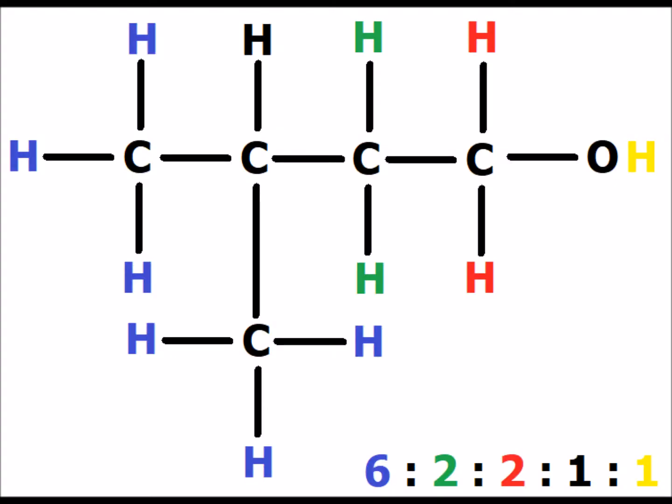In 3-methyl-1-butanol, we have five different types of hydrogen. We have the alcohol hydrogen shown in yellow, and two red hydrogens shifted downfield because of oxygen — confirming this is a primary alcohol. The two methyl group hydrogens, all shown in blue, are symmetry equivalent because of a mirror plane running through the second carbon (the branching carbon, also carbon 3 relative to the hydroxyl oxygen). The ratios are 6 to 2 to 2 to 1 to 1.